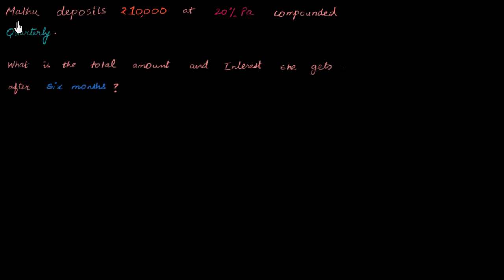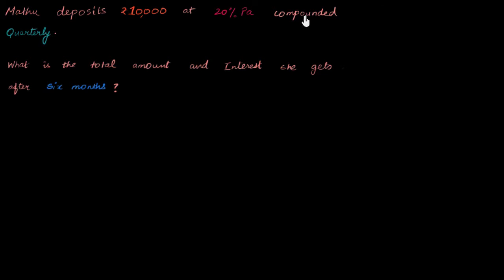Let's read this question. Madhu deposits 10,000 rupees at 20% per annum, compounded quarterly. I'm collecting data from this question: 10,000 is important, 20% the interest rate is important, and then how often it's compounded — compounded quarterly, this is really important. And then what's the question? So what is the total amount and the interest she gets after six months?